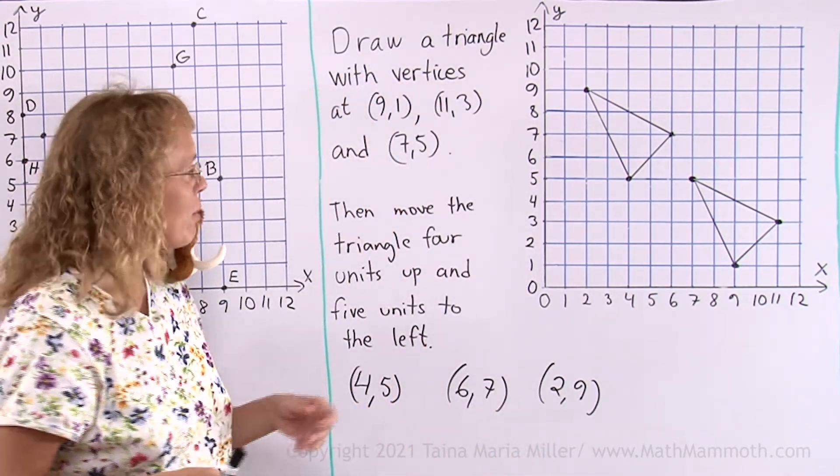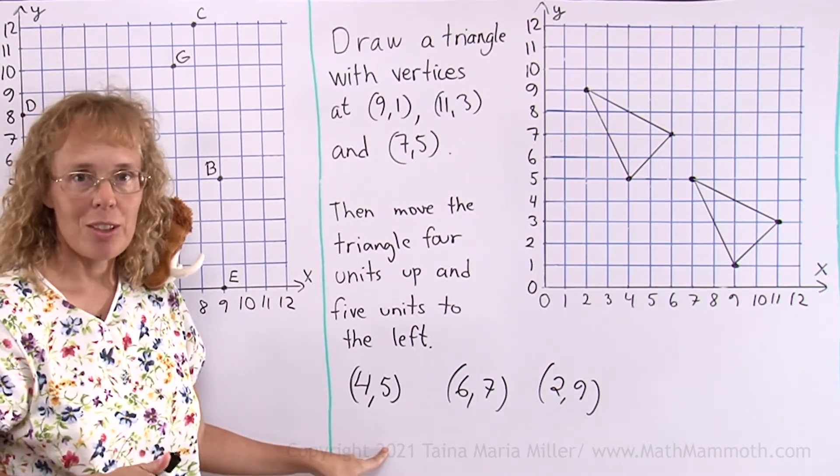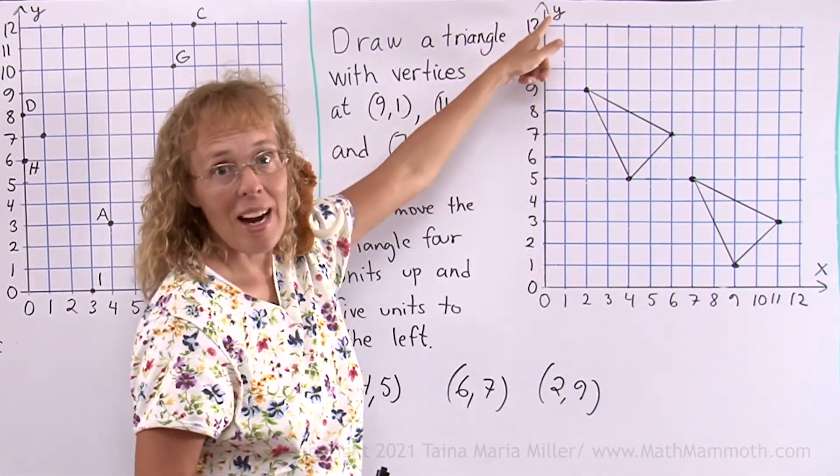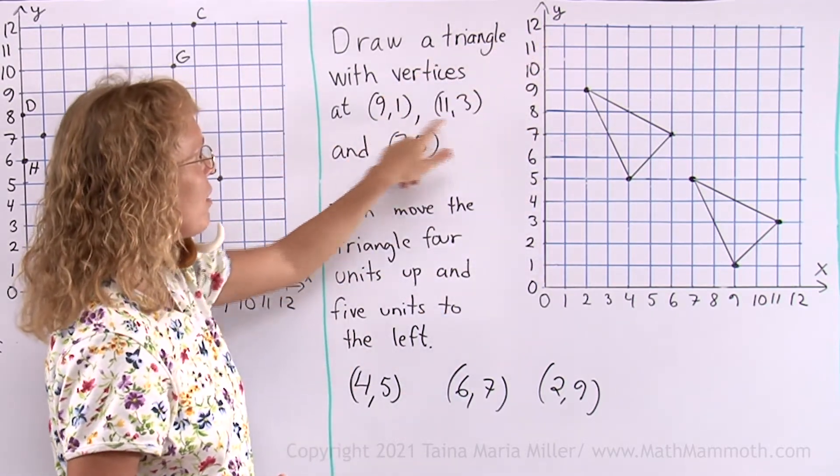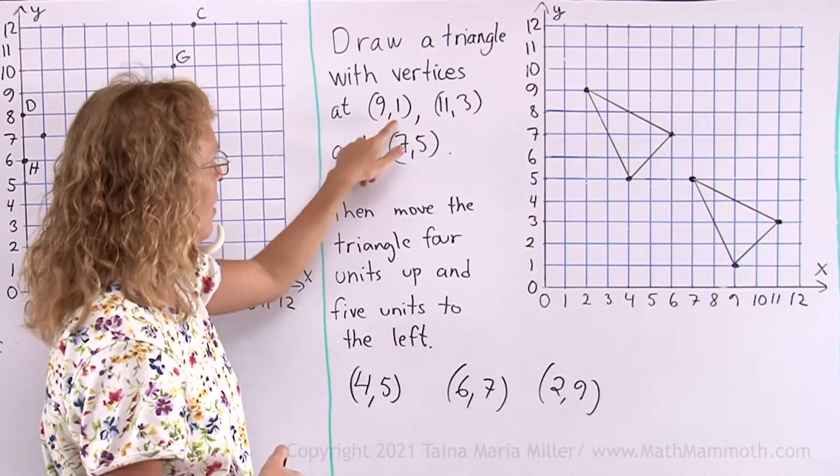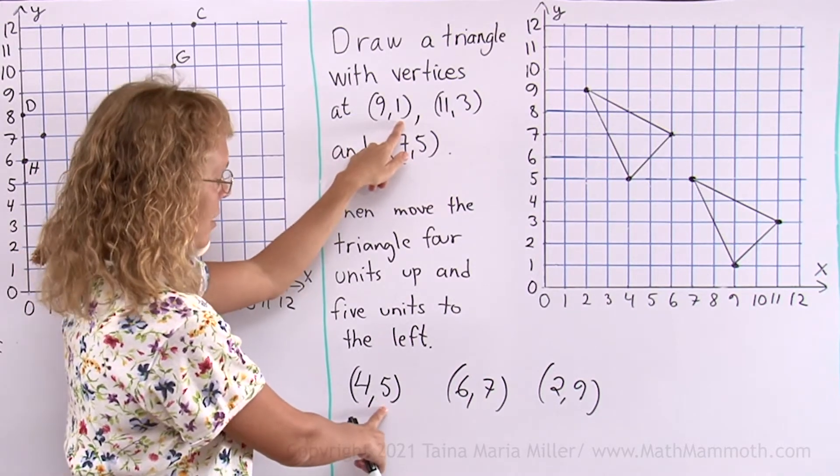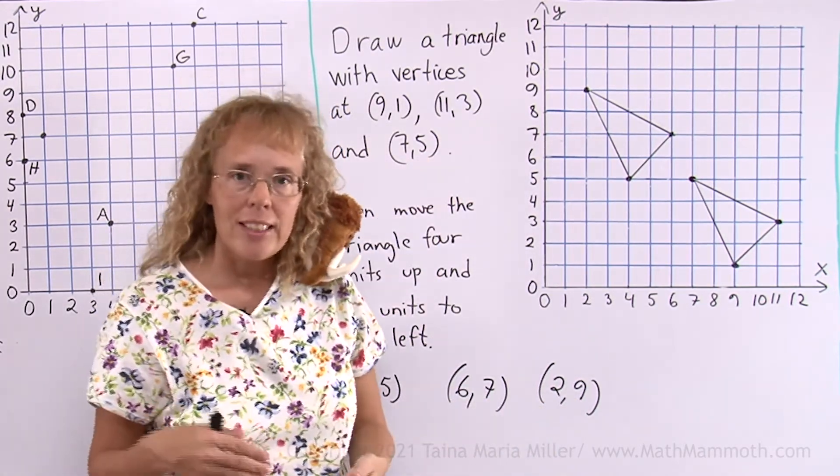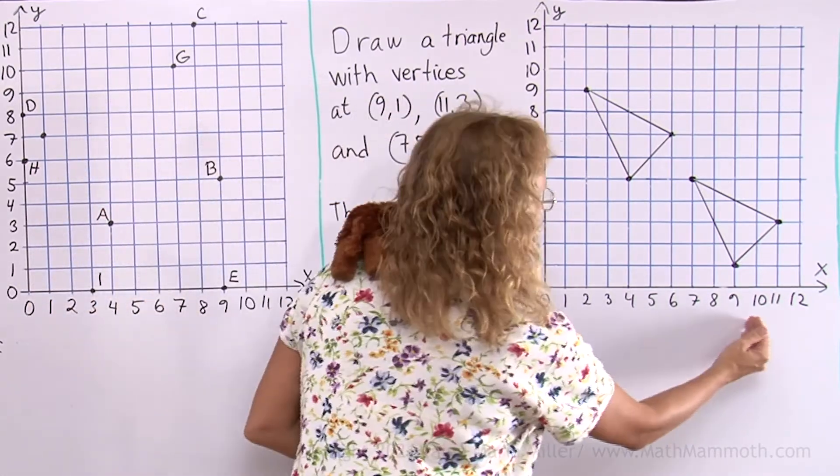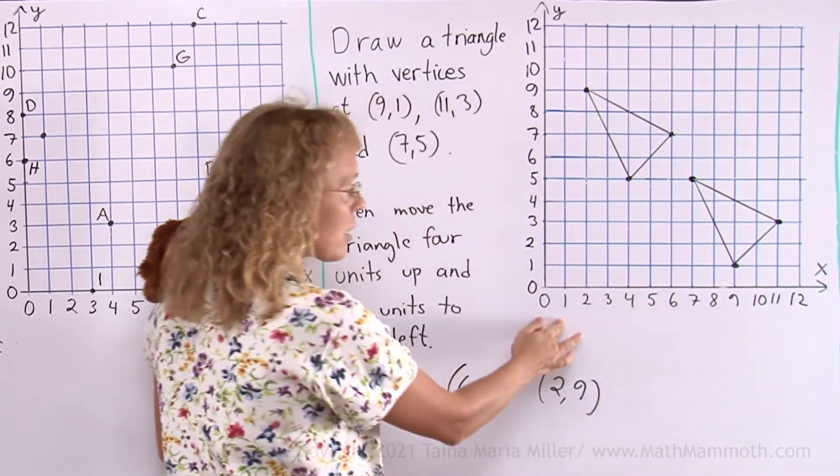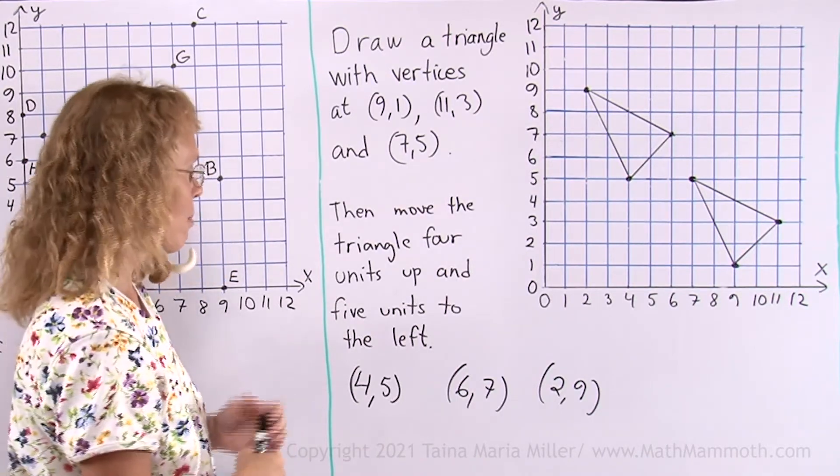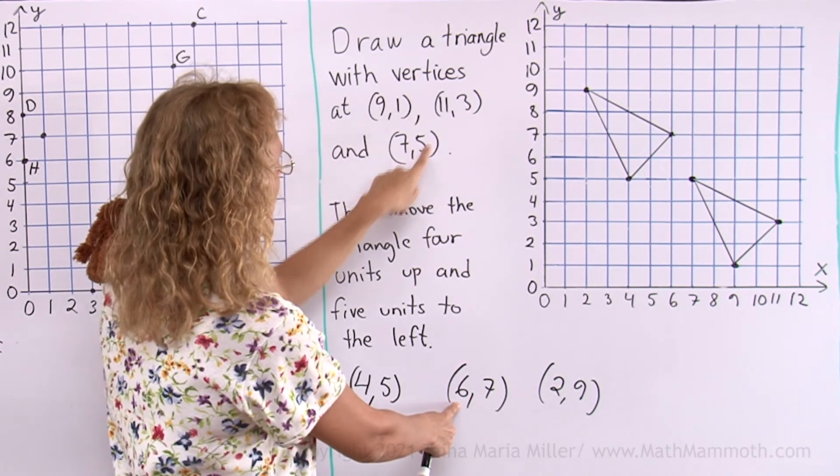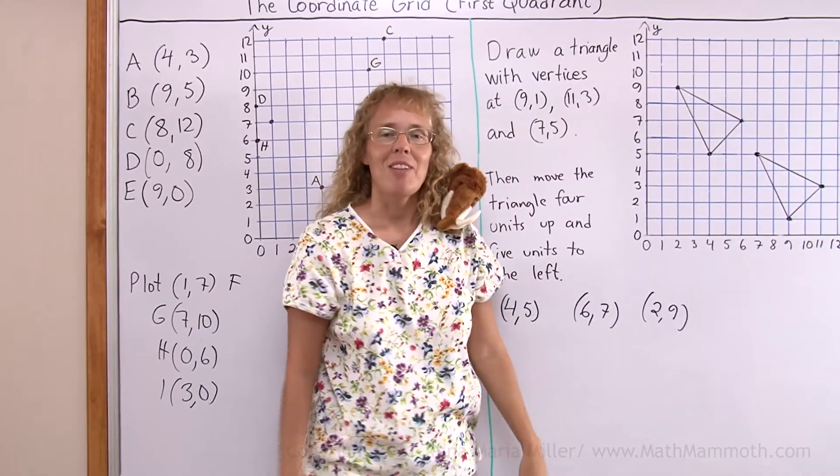I want to point out to you a neat relationship between these instructions and then these coordinates of the points. And that is when it says move the triangle 4 units up, up here means in the direction of the y-axis. And so for each of these points the y-coordinate increases by 4. This here is 1, the y-coordinate is 1. Here it is 5. Here it is 3 and 7. It increased by 4. And here 5 and 9. And for the x-coordinate it said move 5 units to the left, this way. So that's in the direction of the x-axis, but backwards. So the x-coordinate gets reduced, gets smaller by 5. So the x-coordinate here and here, it is 9 minus 5 is 4. Here 11 take away 5 is 6. And 7 take away 5 is 2. I hope this was helpful.